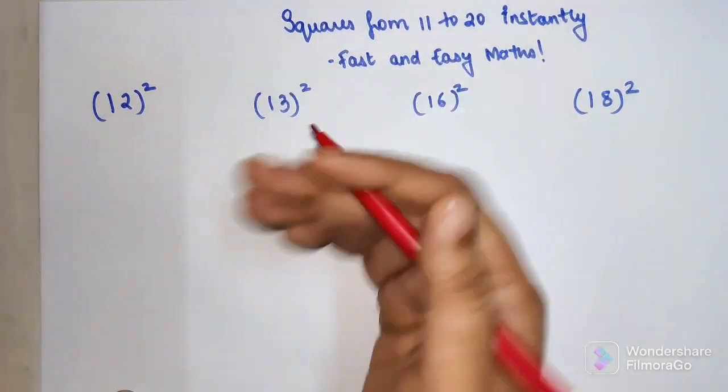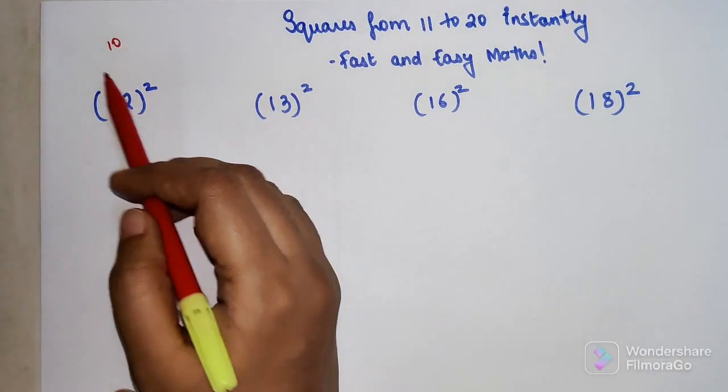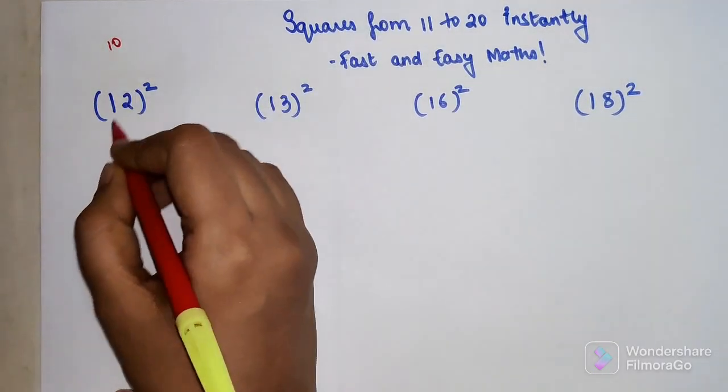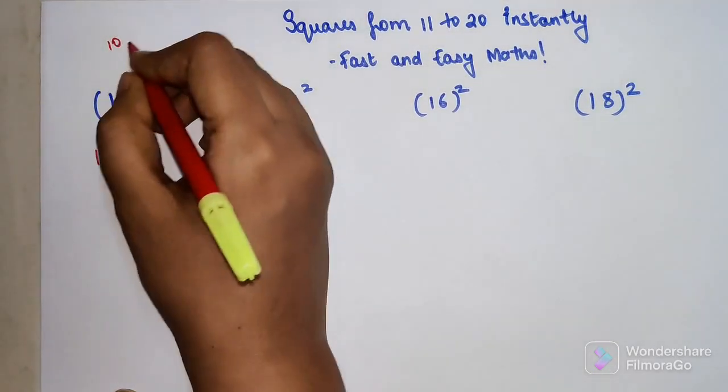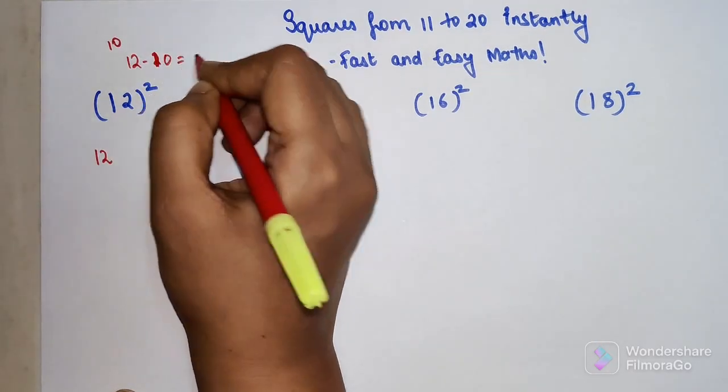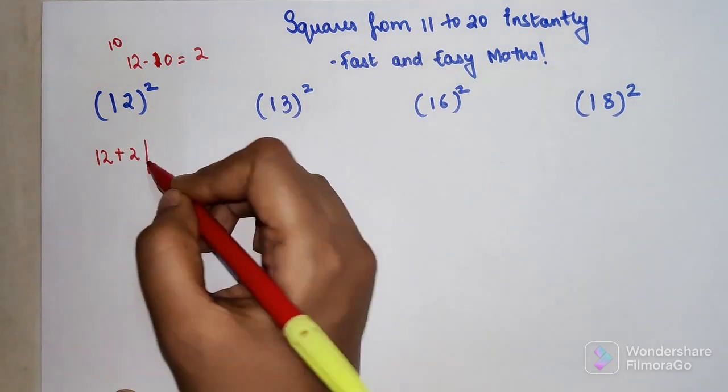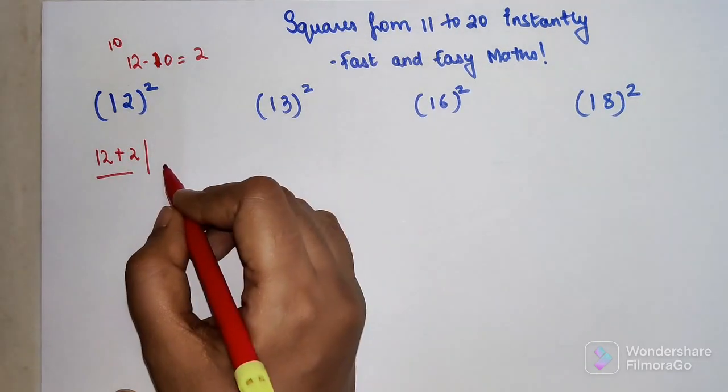All you have to do is find the difference with the base of 10. So basically you take 10 as your base. When you take 10 away from 12, you're left with 2 when you subtract 12 minus 10. So minus 10, your answer is 2. All you have to do is add 2 to 12, to your question, and this is your first part of your answer.